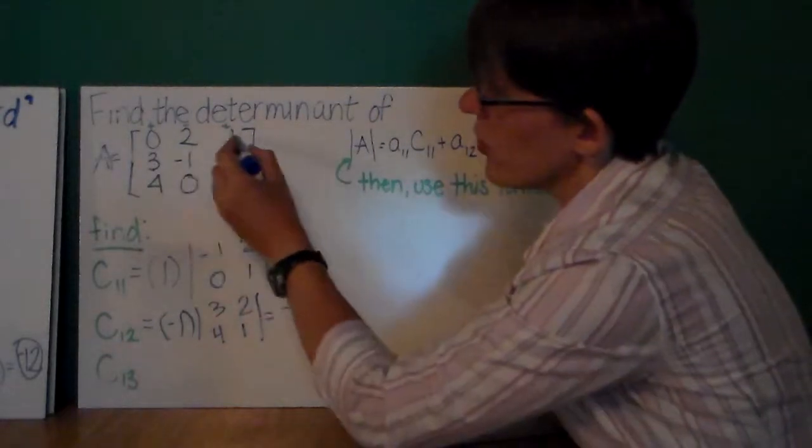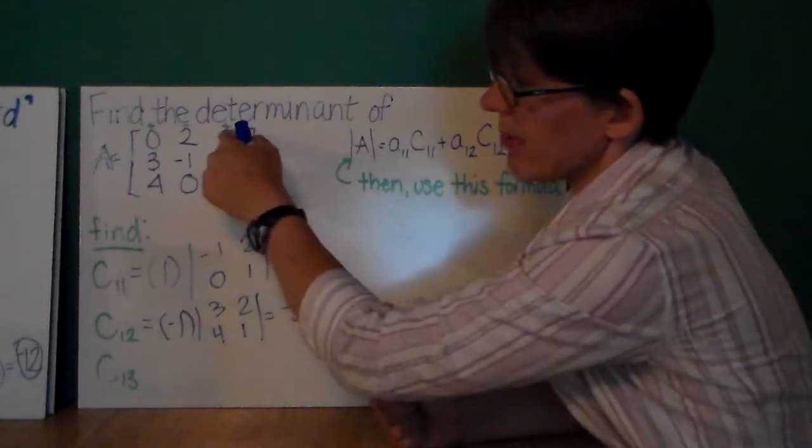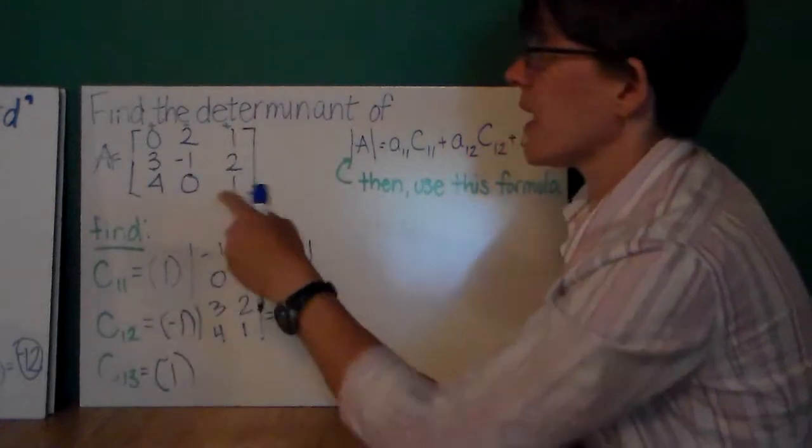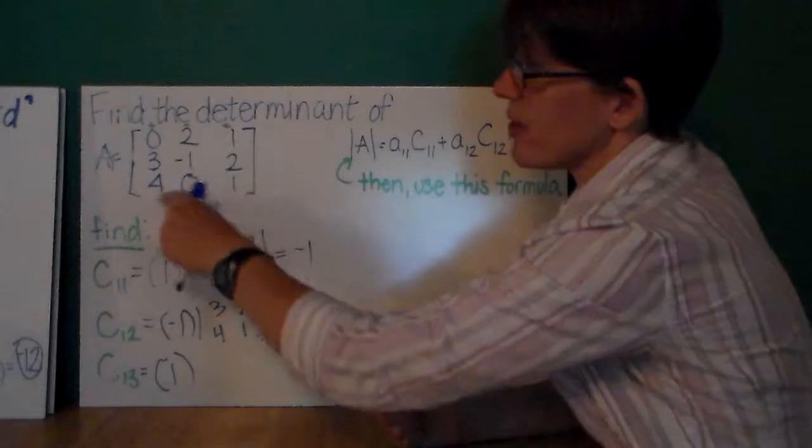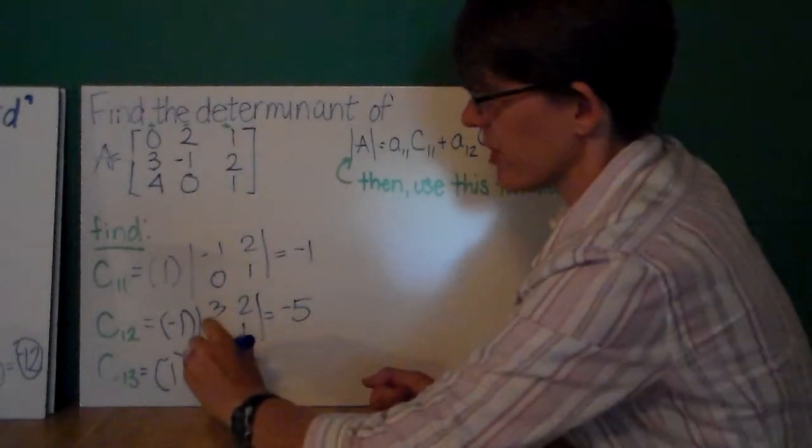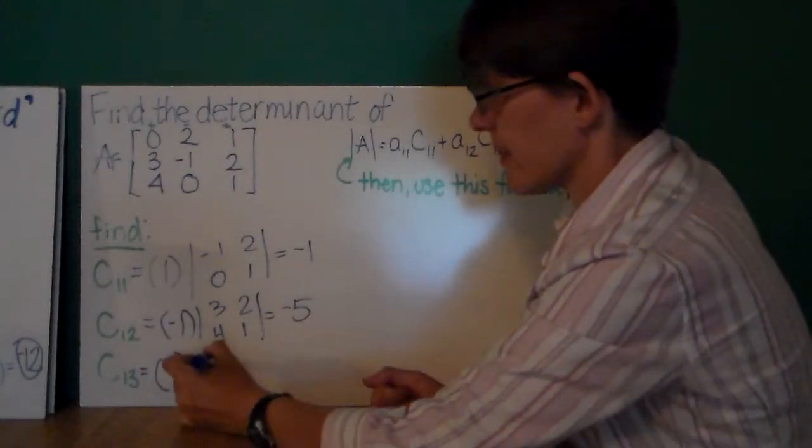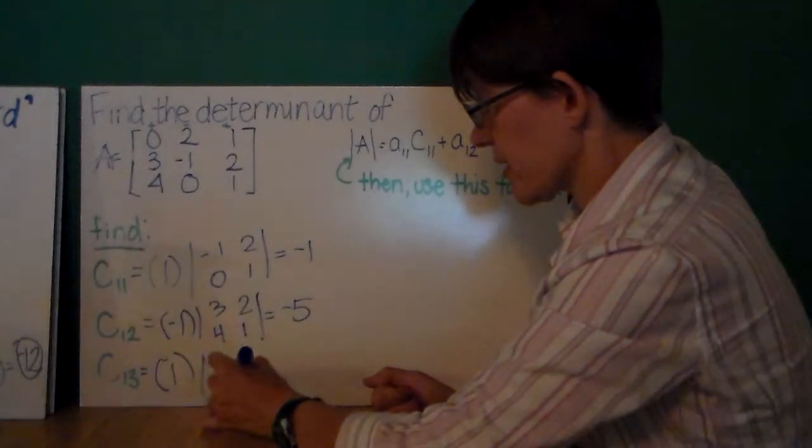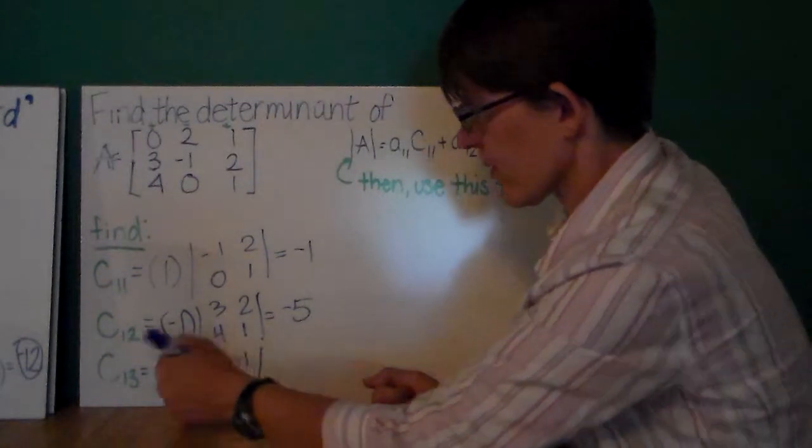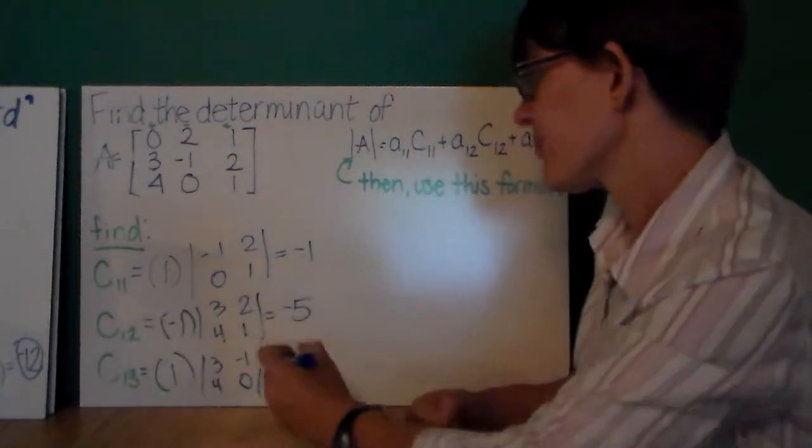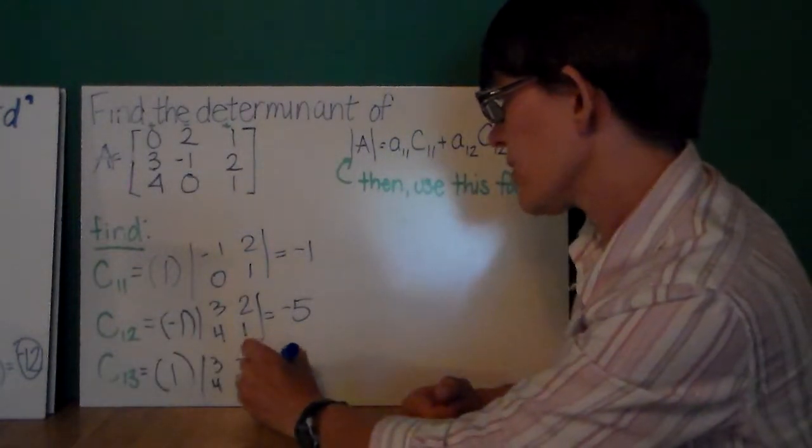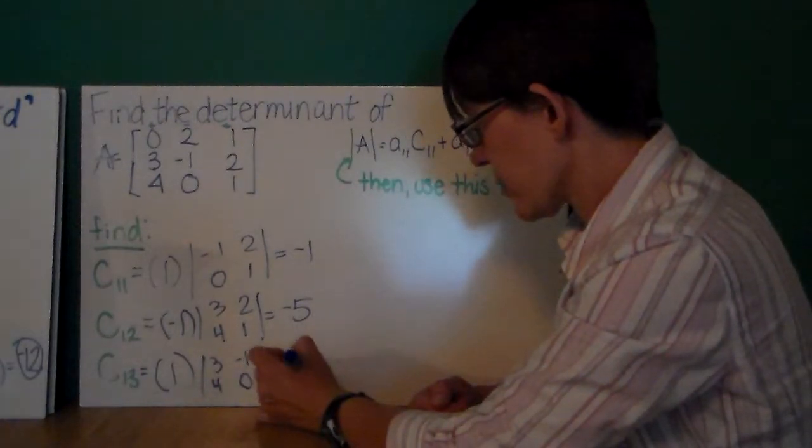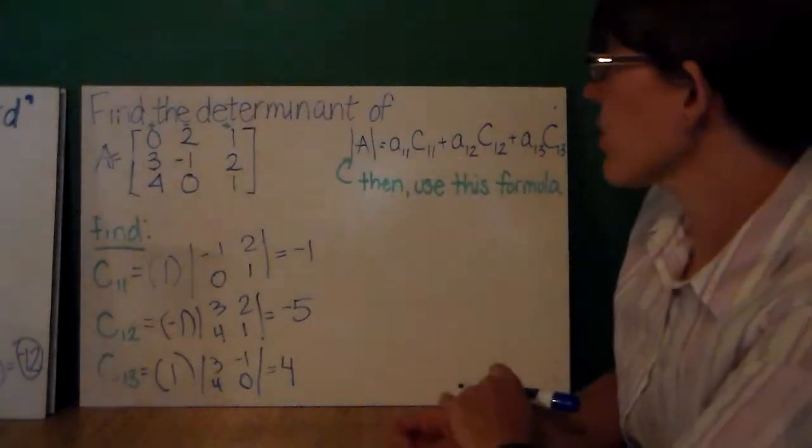And, then, row 1, column 3, that plus sign, that tells me it's going to be positive 1. And, my minor is right down here in the lower left corner. It is 3, 4, negative 1, 0. This should be positive 1. And, 0 minus negative 4 is positive 4 times 1 is positive 4. Okay, so there's my cofactors.